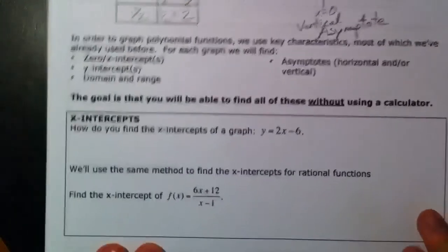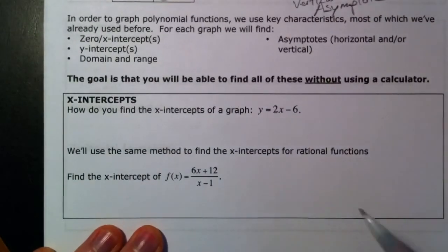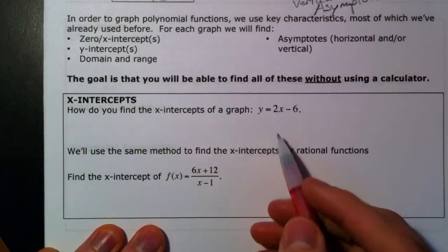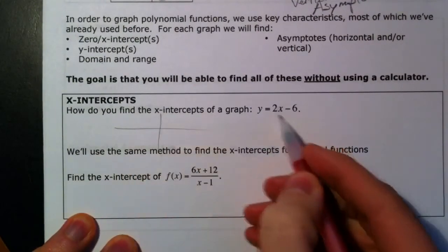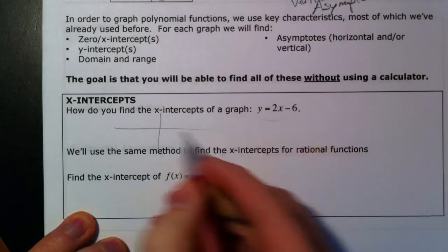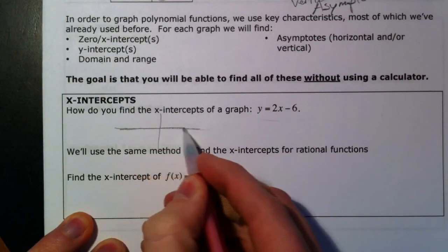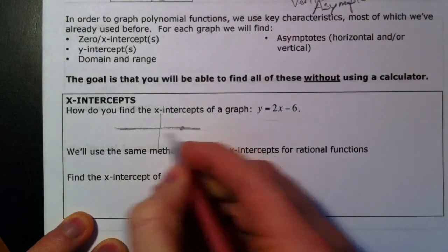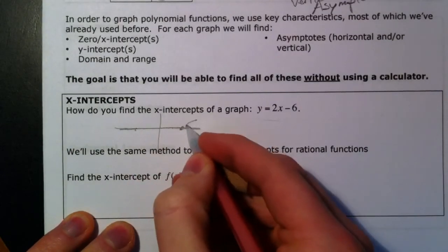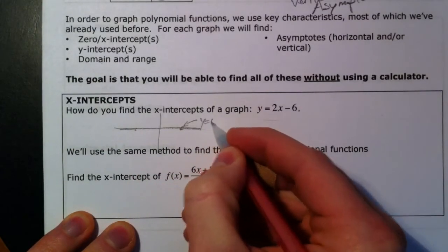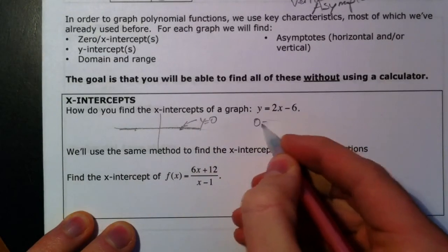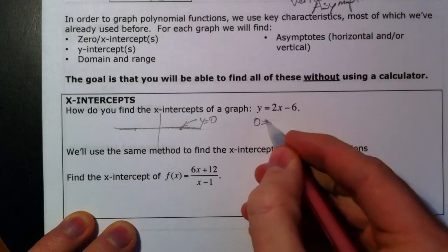So, x-intercepts. We've talked about how to find x-intercepts over and over again. How we found x-intercepts on a linear function like this. X-intercepts are where they cross the x-axis. And what do all of these points have in common is that the y-value is equal to 0. And so what we've been doing all along is just plug in 0 for y.